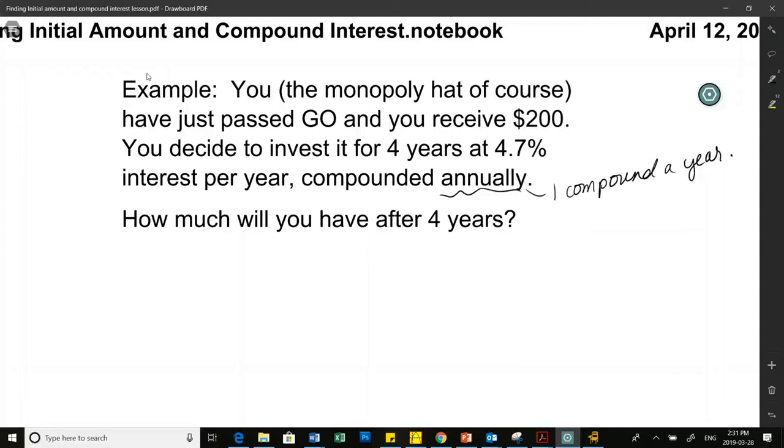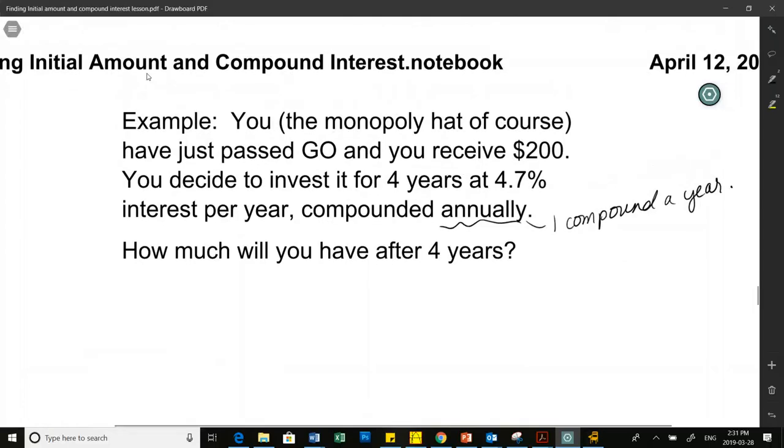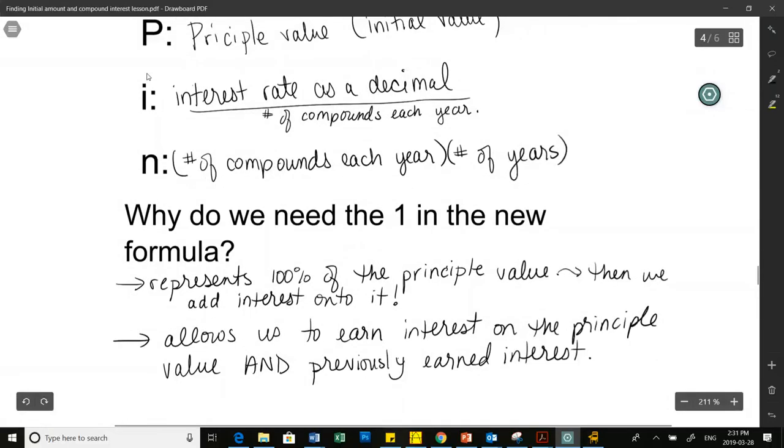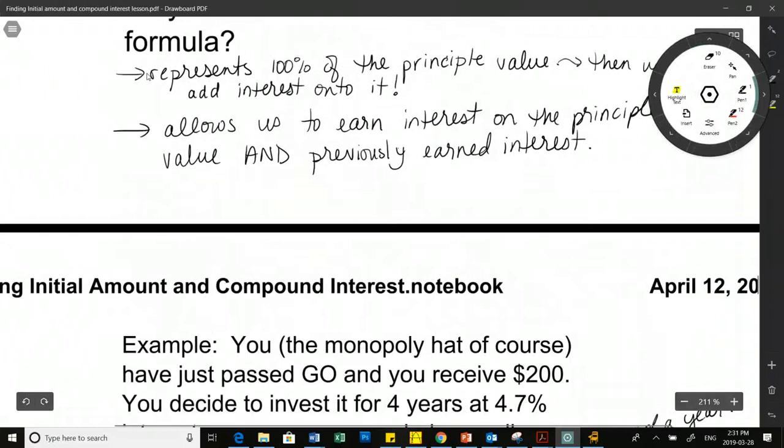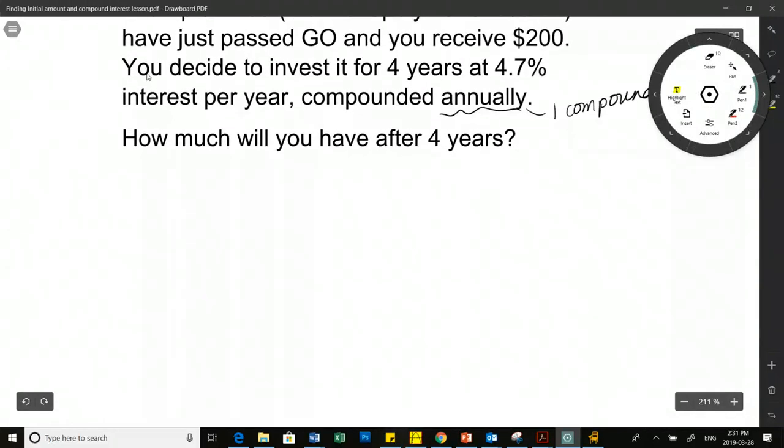Wait, I'm confused. The one in the formula, does that ever change? No, that will always be one. It's 100% of what you invested. So when I say number of compounds per year, this right here, that's what I need to use it for. Okay.